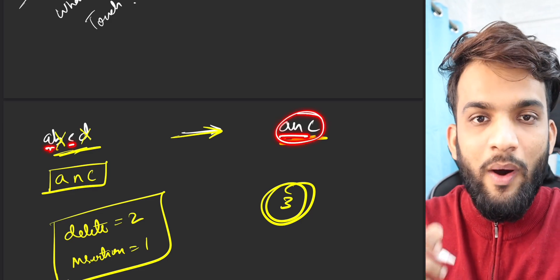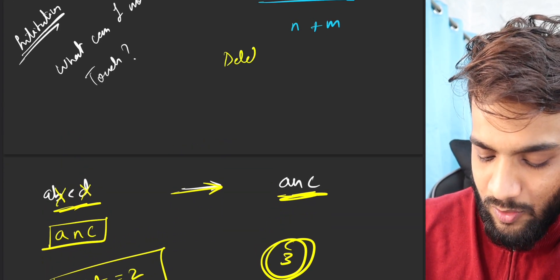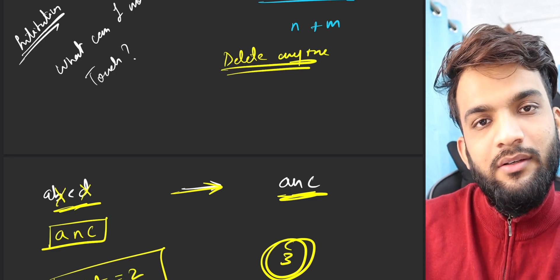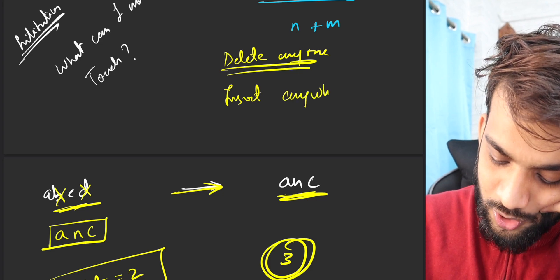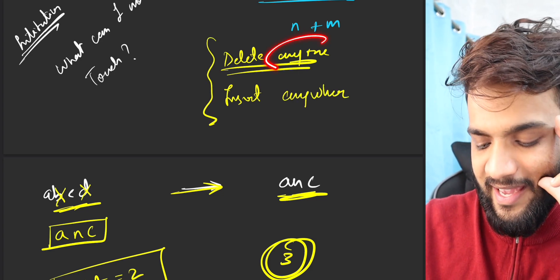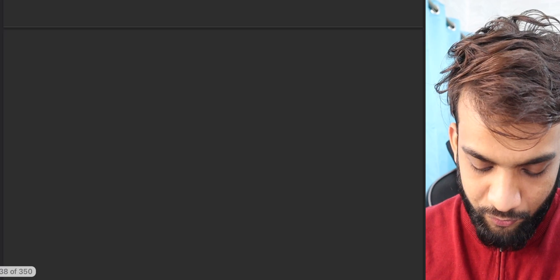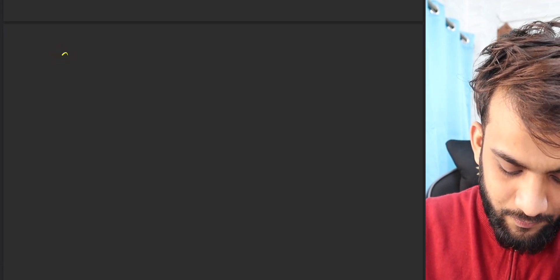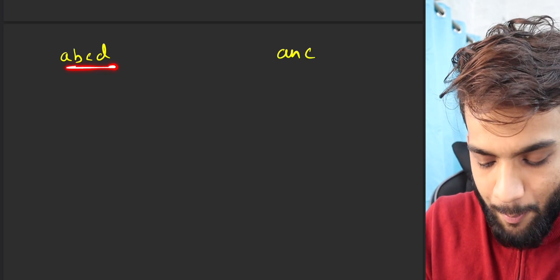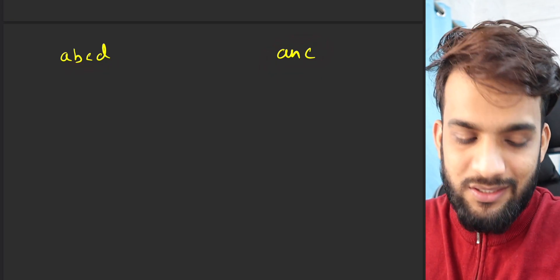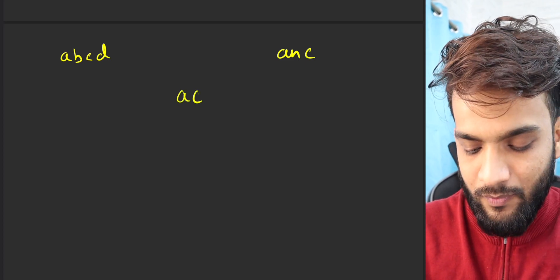Like over here, if you see, we touched B and D, then we inserted N. We did not touch something like AC. Why did we do that? Let's understand. What are the operations? You can delete anyone, right? And there is something like you can insert anywhere. You can insert anywhere. So delete anyone and insert anywhere actually gives you an idea that, okay, if I have ABCD and ANC, what is the common portion among them?